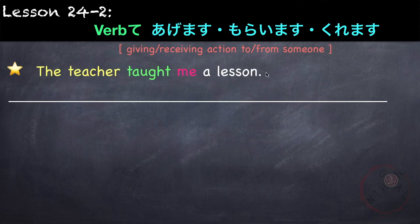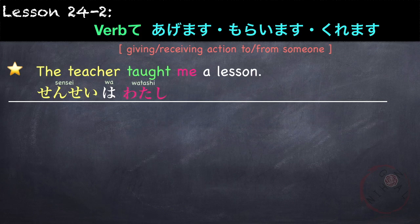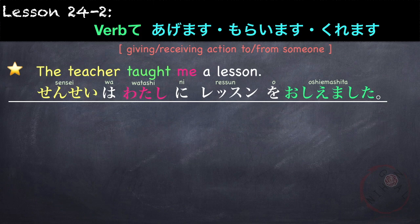For example: The teacher taught me a lesson. Using just the verb, in Japanese it goes: sensei wa, watashi ni, ressun wo, oshiemashita. Here we are simply using the plain past verb form with no nuance of gratitude.